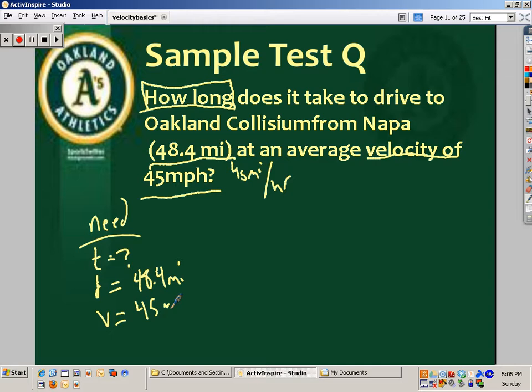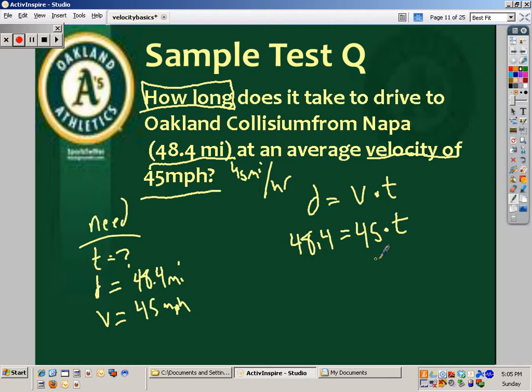Distance equals velocity times time. Now plug in the numbers. 48.4 equals 45 times time. Now we need to solve for time. So I need to move this 45. This is times 45, so the opposite is divided by 45.